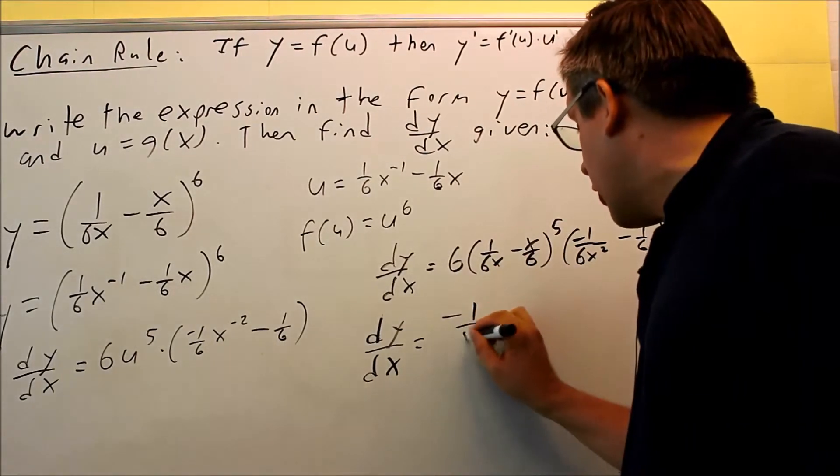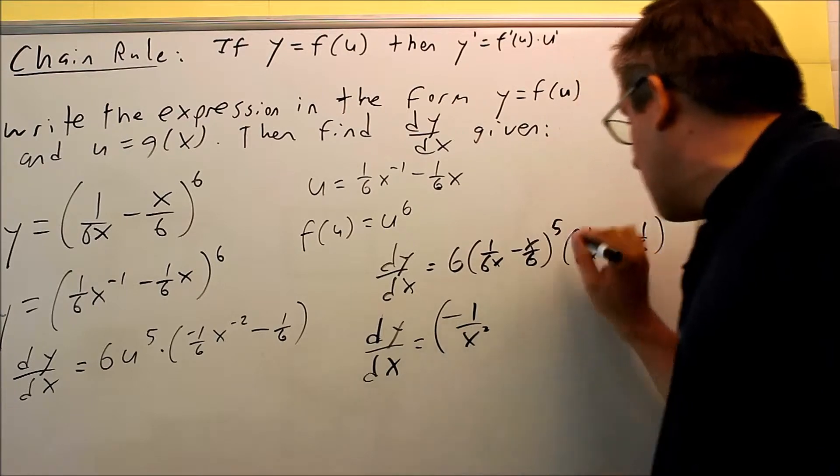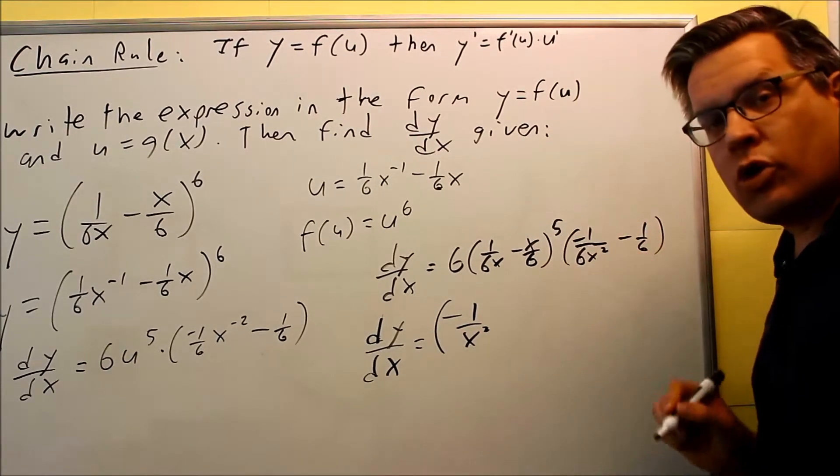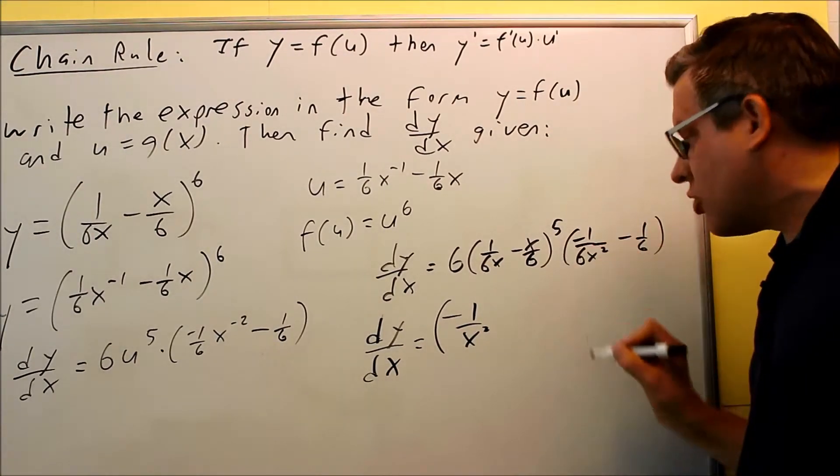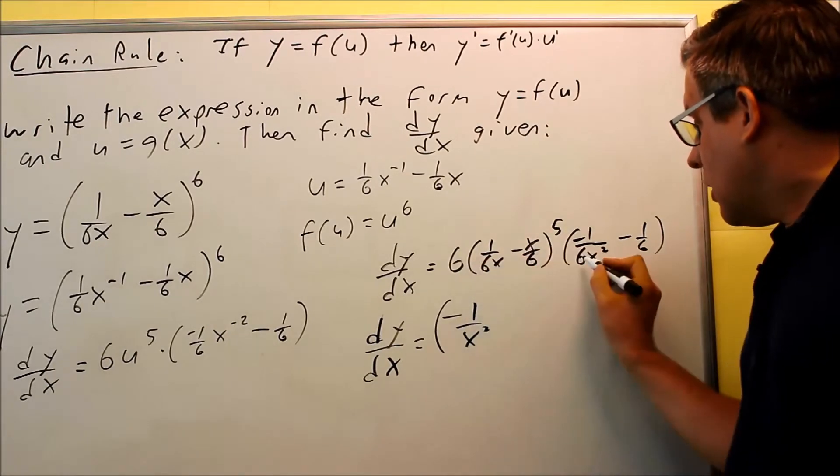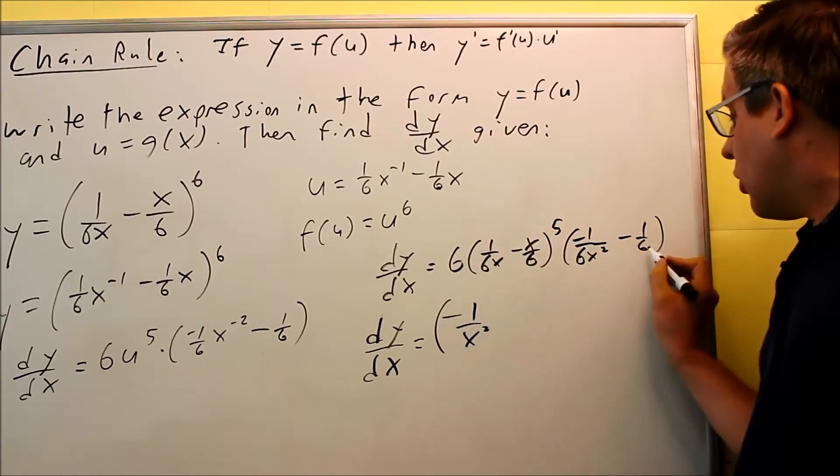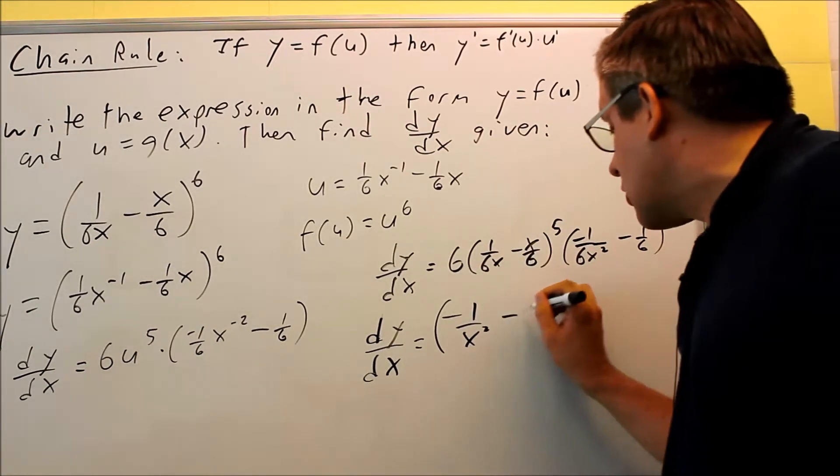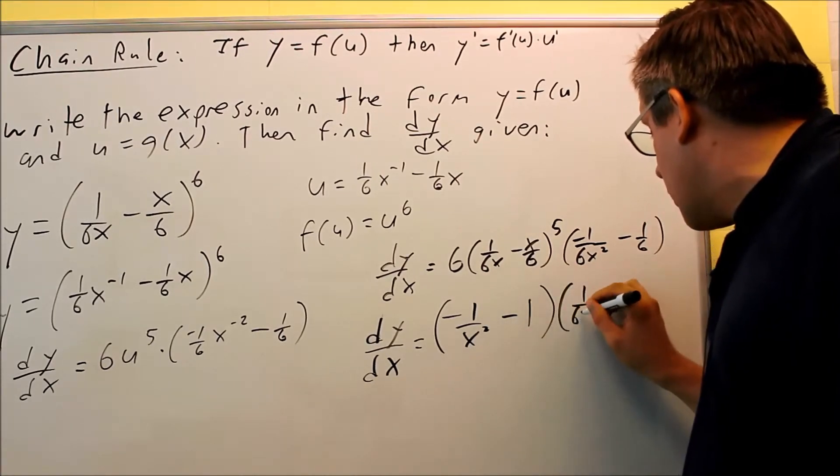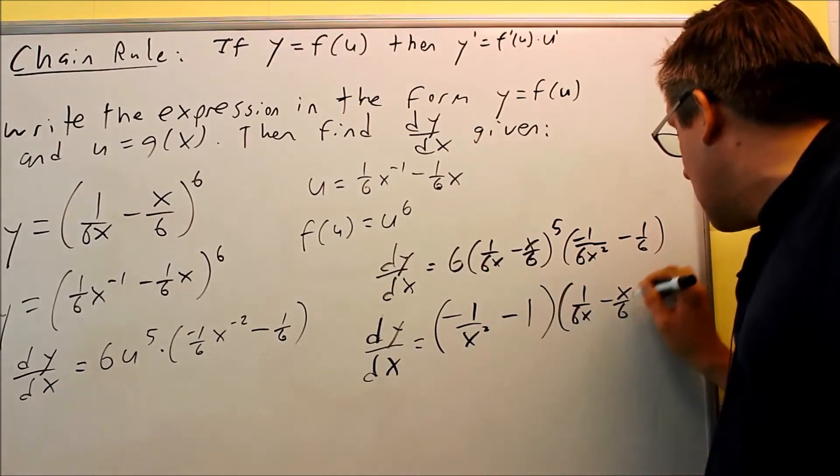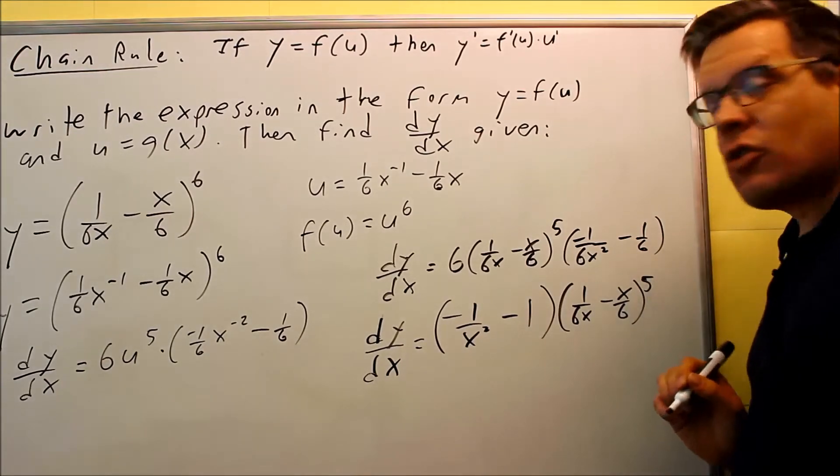So I get negative 1 over x squared. I'll put this part first. It doesn't really matter the order in which you write that. So I'll put this term first. 6 wiped that out. And the 6 over here will cancel that one out too. Then I have minus 1. And then what's left over is 1 over 6x minus x over 6 to the fifth power.